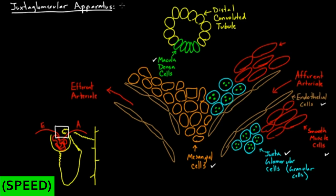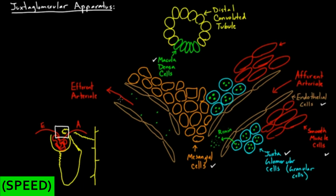The key here is remembering that the goal of the juxtaglomerular apparatus is to release renin. Think about where renin is — I mentioned these little granules. These granules are each going to be loaded with renin. When they dump themselves into the blood vessel, this is your renin. And that renin is going to make its way into the afferent arteriole, then go through the glomerulus, and on the other side it's going to go out the efferent arteriole. So that's how renin gets released.